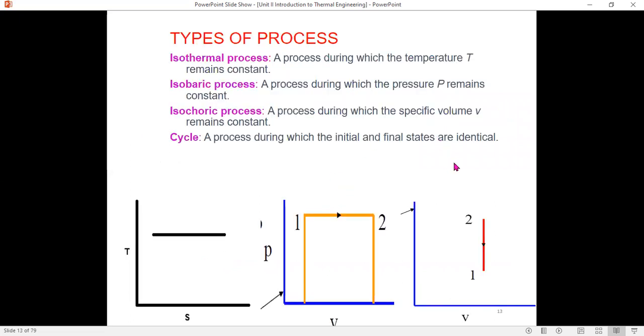Types of processes are also very important. There are isothermal, isobaric, and isochoric processes. A process during which temperature is constant is termed an isothermal process. Iso means same and thermal means heat or temperature. When pressure remains constant, it is an isobaric process. Iso means same and baric relates to bar, a unit of pressure.